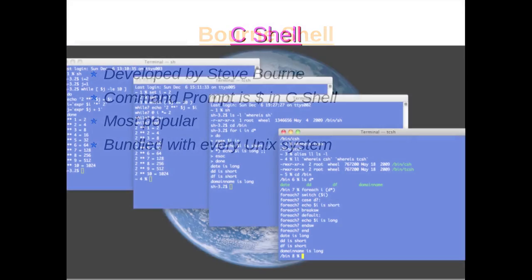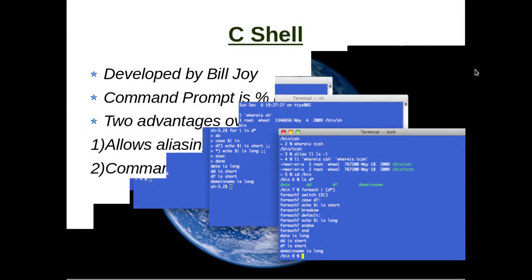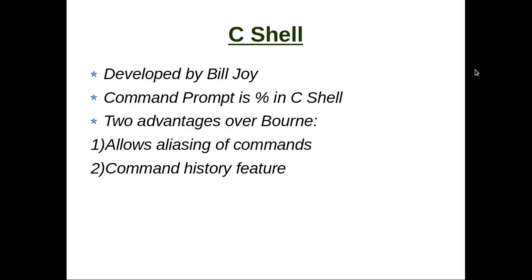The C shell is a hit with those who are seriously into UNIX programming. It was created by Bill Joy while he was pursuing his graduation at the University of California at Berkeley. It has mainly two advantages over the Bourne shell. First, it allows aliasing of commands — you can decide what name you want to call a command by, which proves very useful when lengthy commands used repeatedly are renamed.